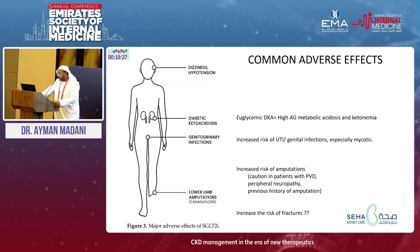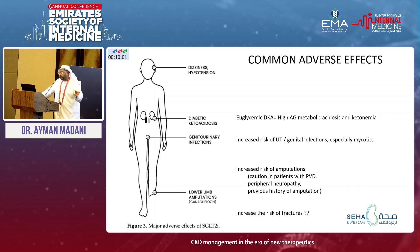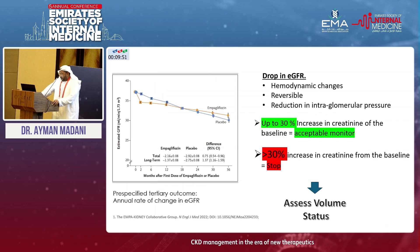When to stop SGLT2 inhibitors: for recurrent UTIs, we try to stop after two or three episodes, but it's important to determine whether the infection is strictly related to SGLT2 inhibitor use or coincidental. Regarding the eGFR drop — up to 30% is the desirable drop; more than that, we should stop, but if still within range, continue. If there is low volume or low blood pressure, stop the drug. If euvolemic with normal blood pressure, reduce and monitor.